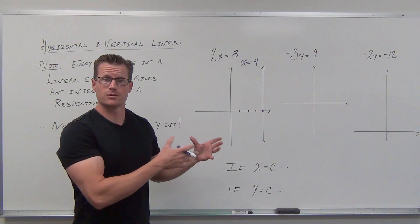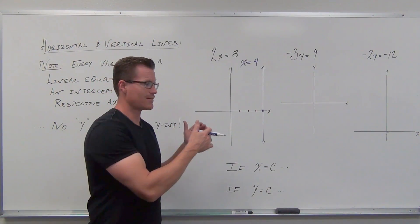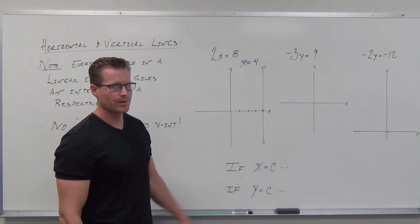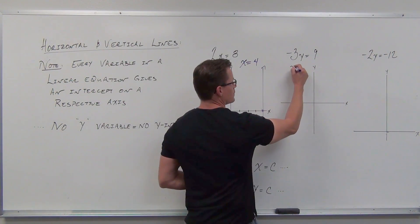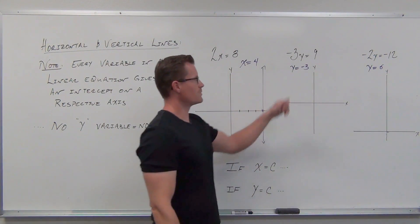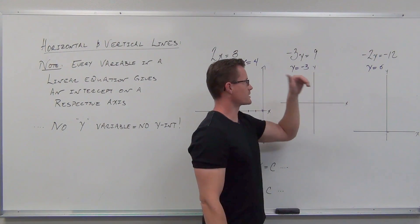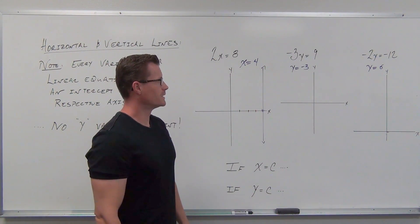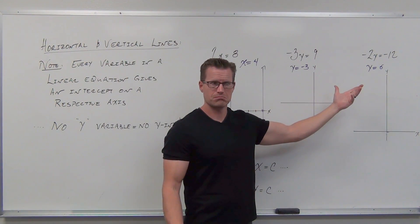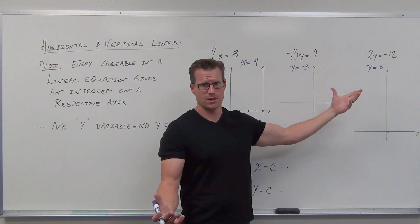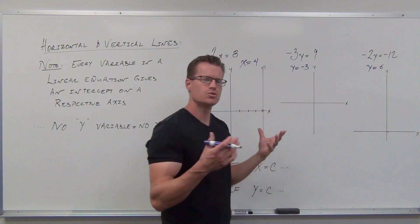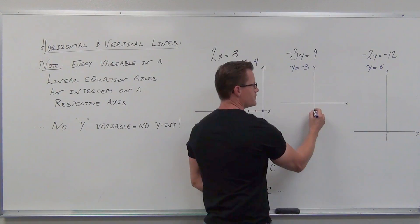That's the interpretation of x equals 4. It is a vertical line — it doesn't have a y variable, so it doesn't have a y-intercept. Now, what about the others? Divide by negative three, we get y equals negative three. Divide by negative two, we get y equals positive six. What variable do these have? They're going to have y-intercepts. What variable do they not have? They're not going to have x-intercepts. How could you draw a line that has a y-intercept of negative three?